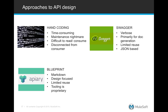Then there's tooling like Swagger. Swagger is a very verbose way, and it will primarily be used for generating documentation on this API. It has a little bit of limited reuse, but it is JSON-based, so it's quite familiar to a lot of developers as far as the syntax is concerned.